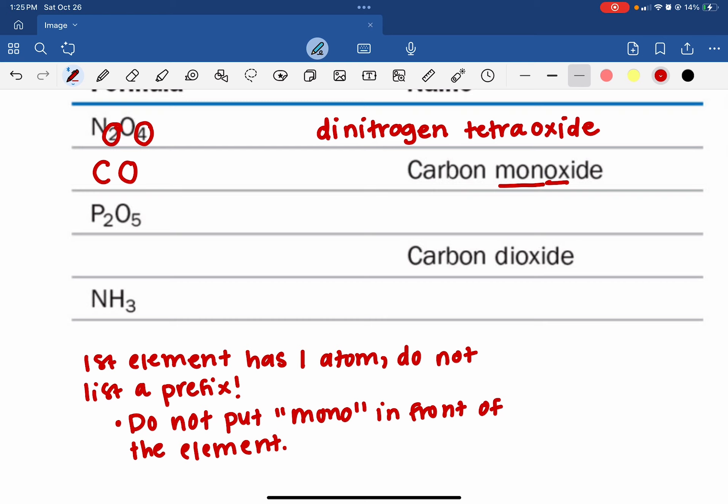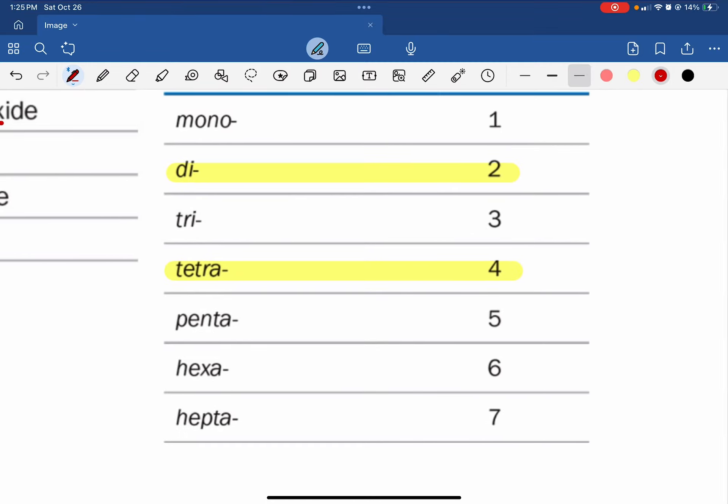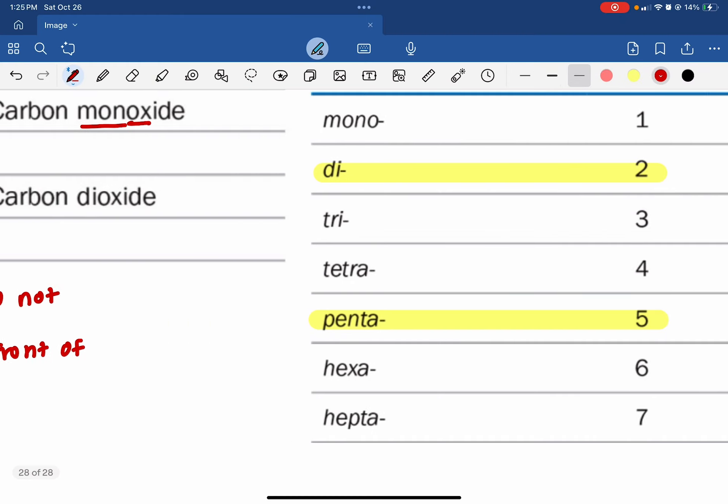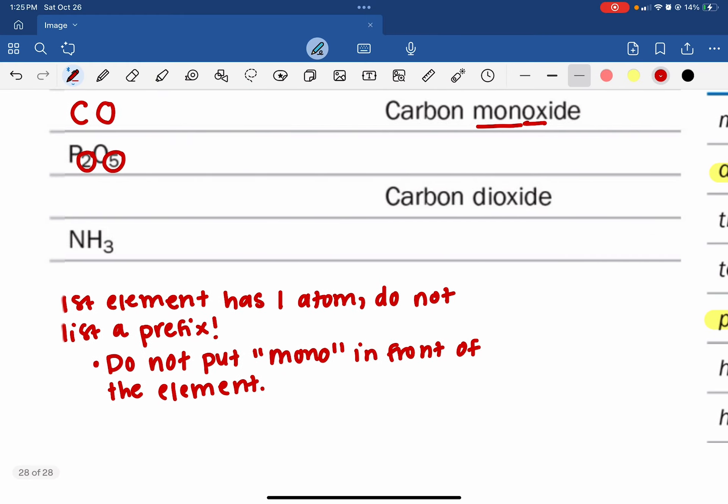The third one, P2O5, we have two and five as our prefixes here. I'm going to go ahead and erase four since we've used that one. And we now are on the fifth one. So penta. So we're using di and penta.